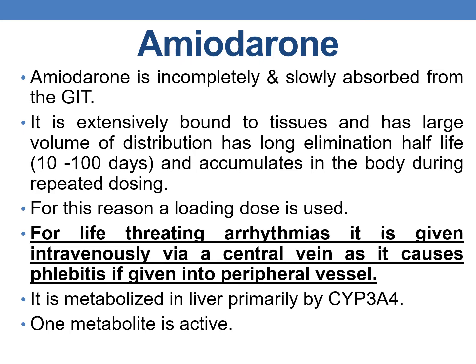Amiodarone is incompletely and slowly absorbed from the GIT. It is extensively bound to tissues, has a large volume of distribution, and a long elimination half-life of 10 to 100 days, accumulating in the body during repeated dosing. For this reason, a loading dose is used. For life-threatening arrhythmias, it is given intravenously via a central vein, as it causes phlebitis if given into a peripheral vessel. Amiodarone is mainly metabolized in the liver by CYP3A4, and one of its metabolites is active.